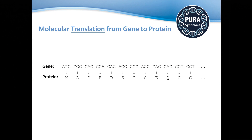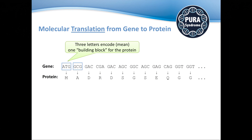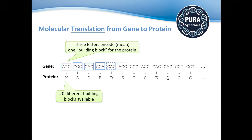Now let's see how genes function. The upper row is called the gene and the lower one is called the protein. Genes encode information, and it's always three letters that make one building block — they encode one amino acid. So you always jump in groups of three, and three letters always encode one building block on the protein side. For example, ATG is always methionine, GCG is always alanine, and so on. This is a very defined translation.